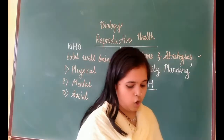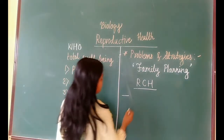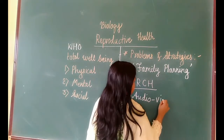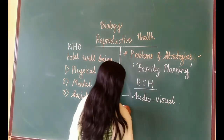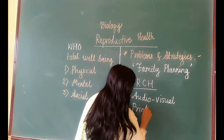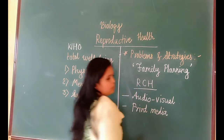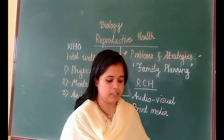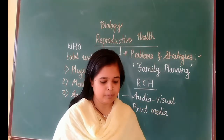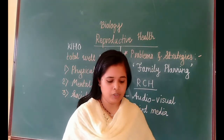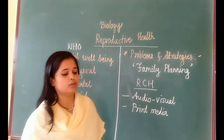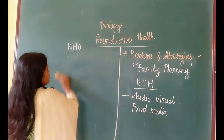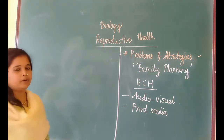With the help of audiovisual and print media, the government took the help of audiovisual media such as television and radio, as well as print media like newspapers, to create awareness among people about reproductive health. Non-governmental agencies also took various steps to create this awareness. Parents, other close relatives, teachers, and friends also play an important role in sharing information among adolescents.